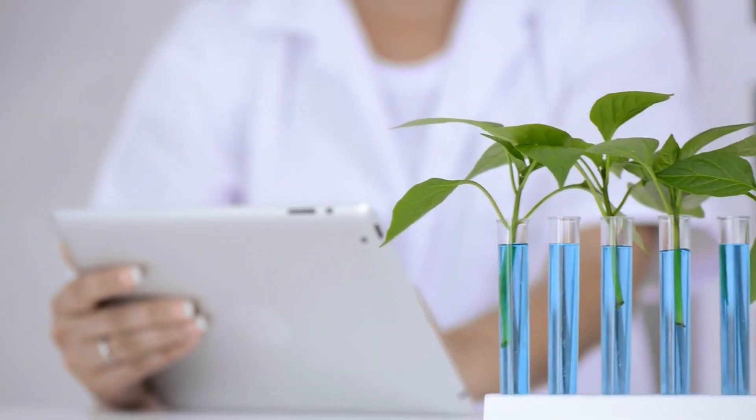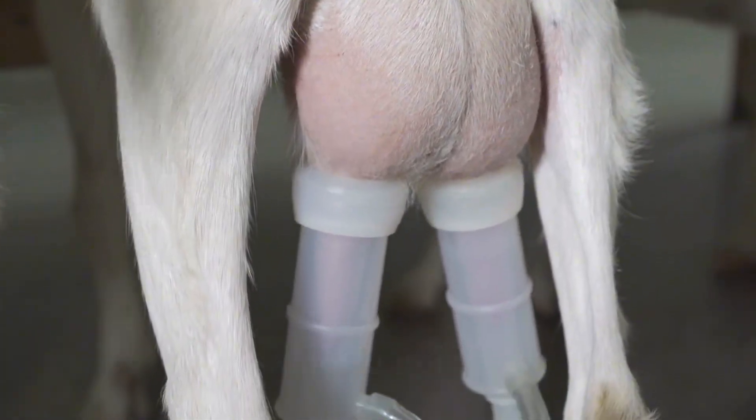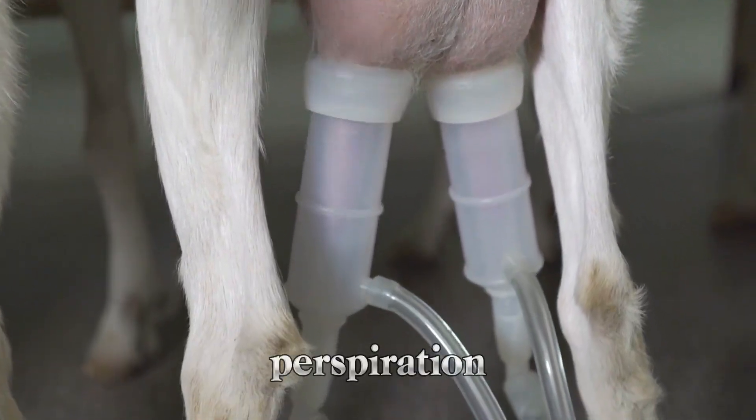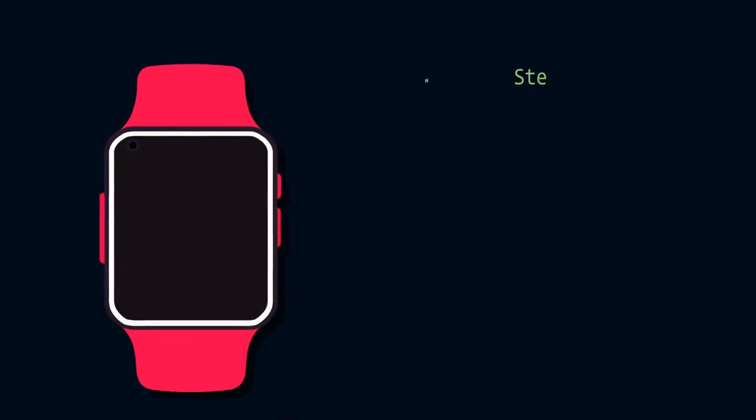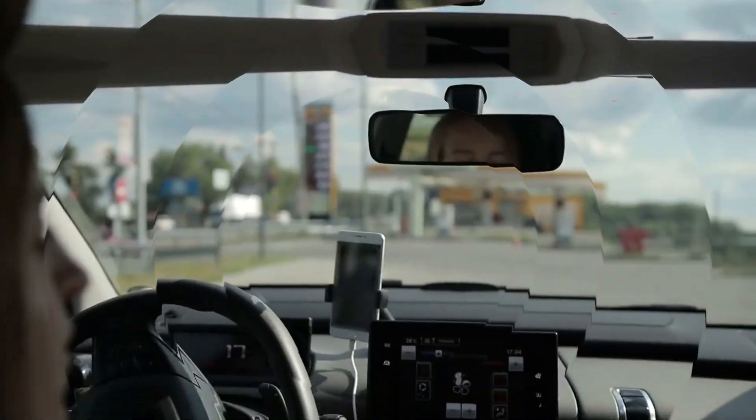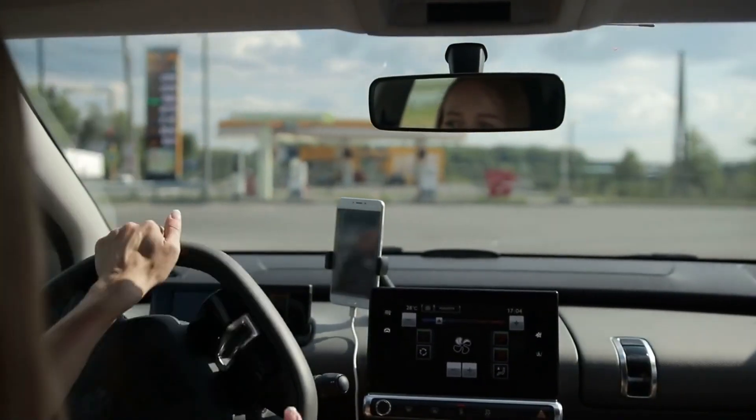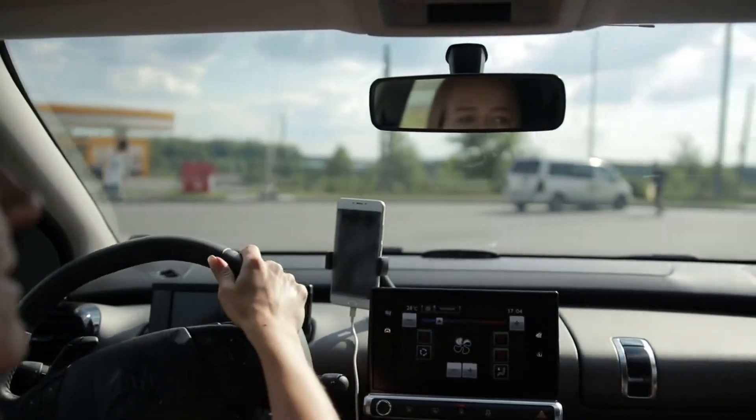And it doesn't stop there. Scientists have also developed sweat-powered fuel cells. These tiny devices use lactic acid in your perspiration to generate small amounts of electricity. Right now, these cells can power fitness trackers and health sensors, but researchers are hoping to scale them up for even bigger applications.